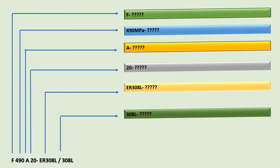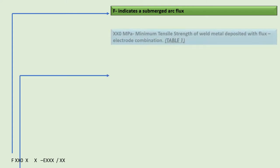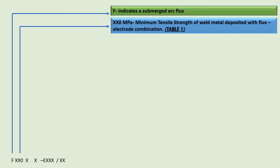Let us understand the designators constituting the flux electrode classification for SFA 5.39, the specification for flux and electrode combinations for submerged arc joining and surfacing of stainless steel and nickel alloys. We have a designator 'F', which indicates a submerged arc flux. After this, we have a three-number designator which indicates the minimum tensile strength of weld metal deposited with the flux electrode combination.